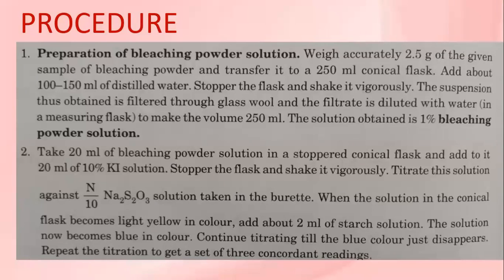The first step is the preparation of bleaching powder solution. The second step is 20 ml of bleaching powder solution mixed with 20 ml 10% KI solution, then titrated against sodium thiosulphate taken in the burette. In the initial state the beaker color is light yellow. Then we add 2 ml starch solution, which gives blue color. This blue color is titrated against sodium thiosulphate and the color disappearance will be the end point. Then collect the concordant reading.